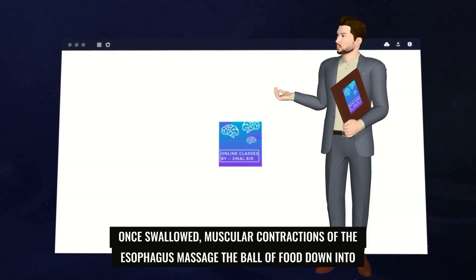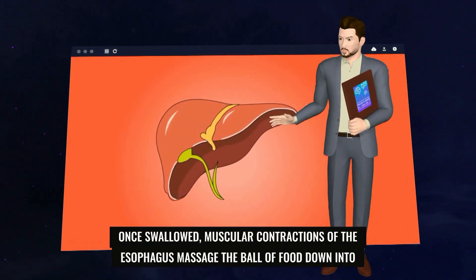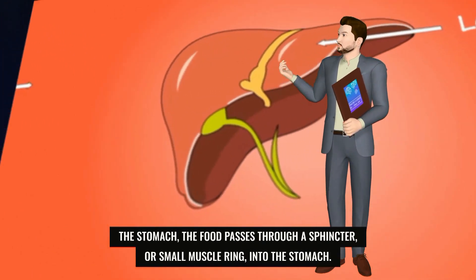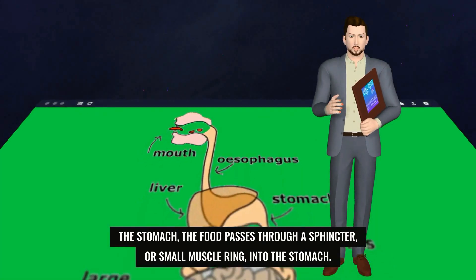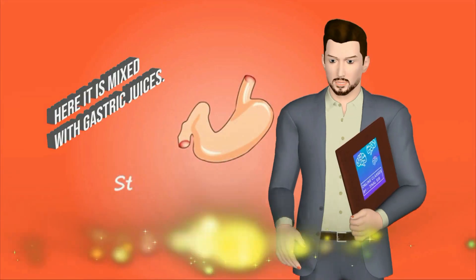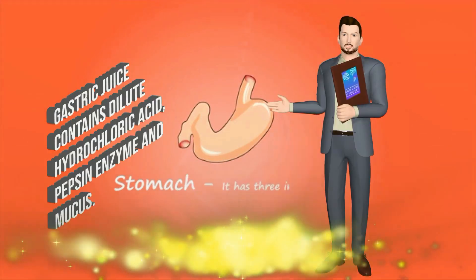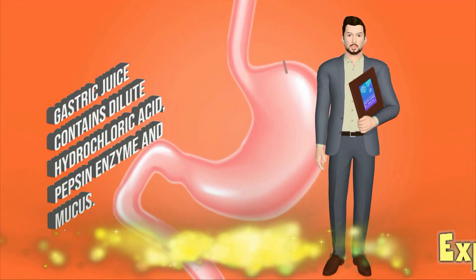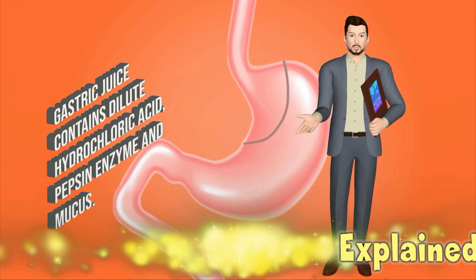Once swallowed, muscular contractions of the oesophagus massage the ball of food down into the stomach. The food passes through a sphincter, or small muscle ring, into the stomach, where it is mixed with gastric juices. Gastric juice contains dilute hydrochloric acid, pepsin enzyme, and mucus.